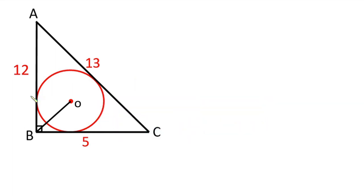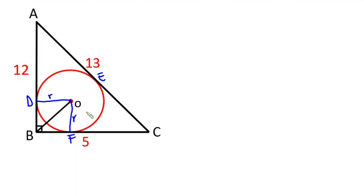The first thing I'm gonna do is name the points of contact. I'll call this point of contact D, then this point of contact E, and lastly this point of contact F. Now, O is the center of the circle, so the distance from D to O is the radius of the circle. Likewise, the distance from O to F and from O to E are also the radius of the circle.